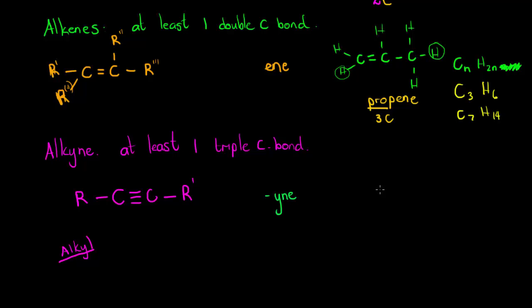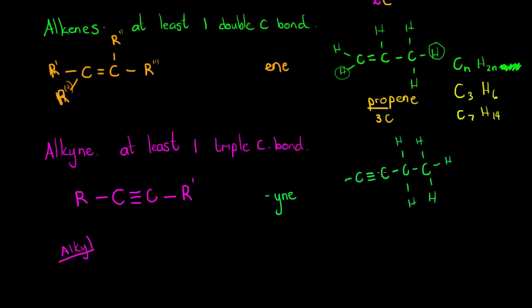An example is butyne. If I have one carbon triple-bonded to another carbon — butyne has four carbons — we draw it out with the two triple-bonded carbons and two additional carbons. This last carbon needs three hydrogens, the next needs two, the triple-bond carbons use all four valence electrons in the triple bond, and the final carbon needs one hydrogen. That is called butyne. The prefix "but" is used for four carbons.